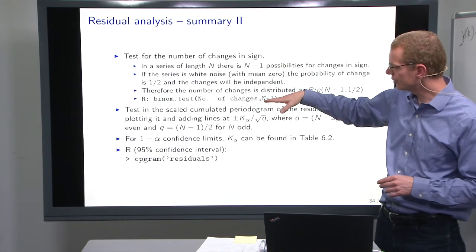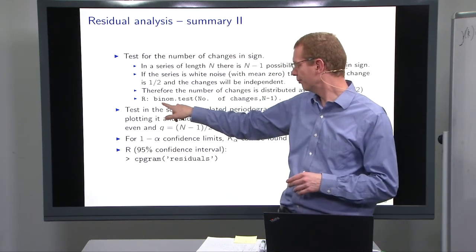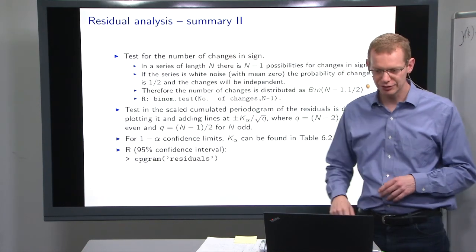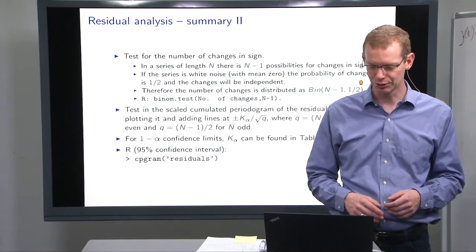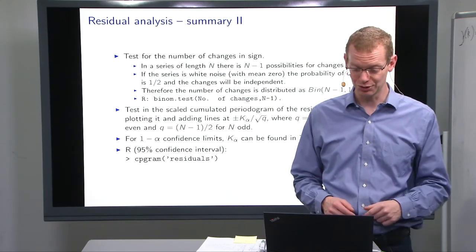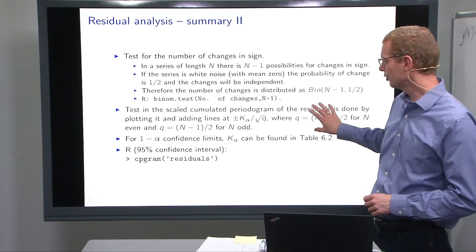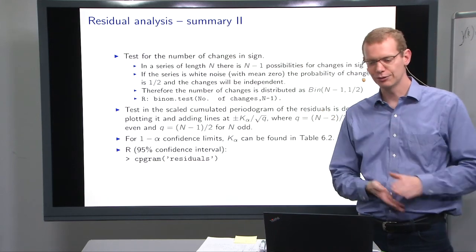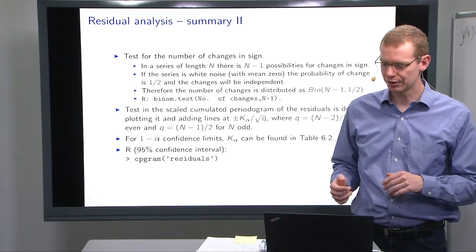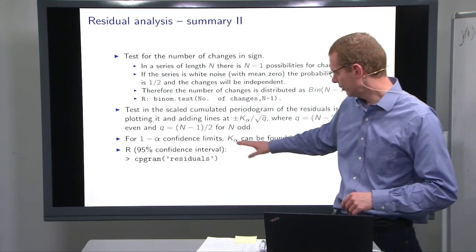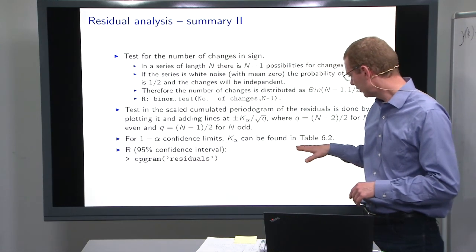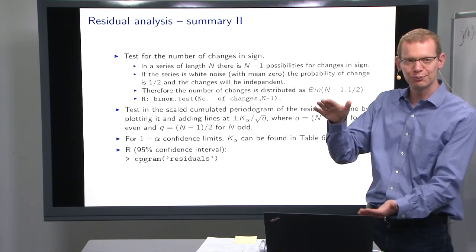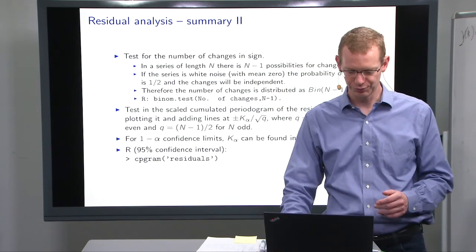As mentioned, you can also do the sign change test. You can use the binom.test function in R, give the number of sign changes and give the number of possible sign changes as arguments, and it will give you the conclusion. At least it will give you the output so you can make the conclusion. I'll just show you the accumulated periodogram, how it works. That's another way to see if there are some frequency patterns that are not explained. You can get the limits for this, there's a table 6.2 that gives you how to define the limits to get the different probability intervals for the accumulated periodograms.